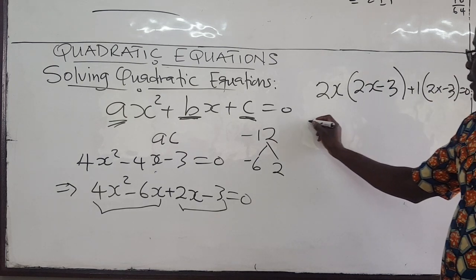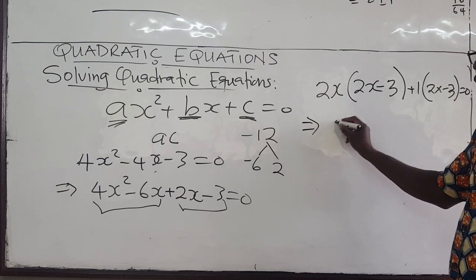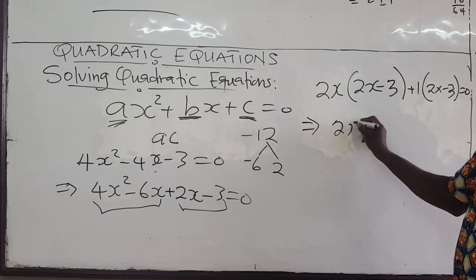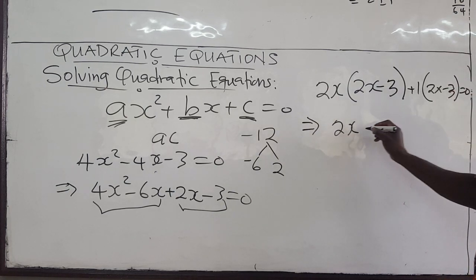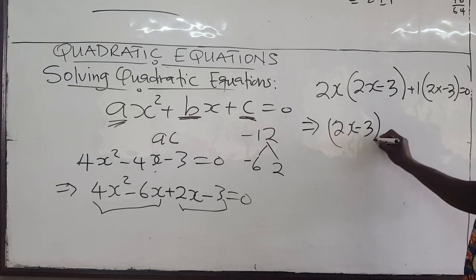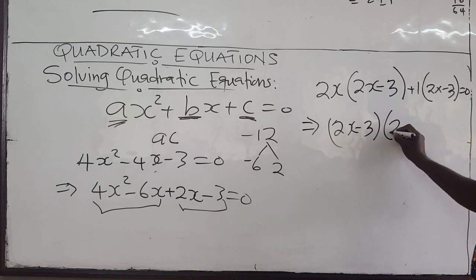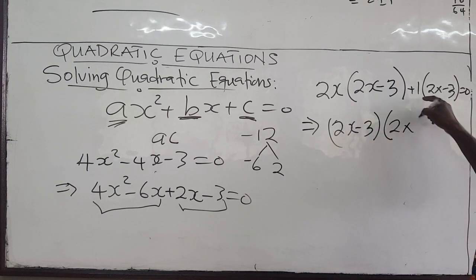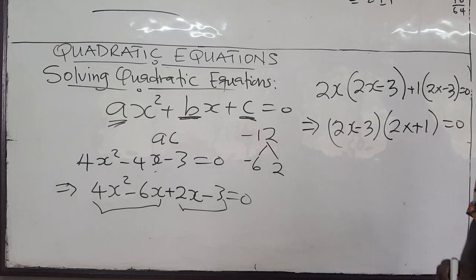So we can rewrite this — 2x minus 3 is common, you can see that. So you factorize that out, and you are left with 2x plus 1, and that is equal to 0.